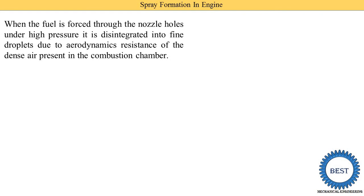We require spraying the fuel at a higher pressure than the compressed air present inside. Suppose the compressed air pressure is 25 bar — then we require to spray the fuel at 70 to 80 bar. This way the fuel is properly penetrated inside the combustion chamber. Penetration length is the distance between the cylinder head and TDC. When the spray reaches up to TDC, it is called proper penetration. Distribution means the fuel goes into every part of the combustion chamber.